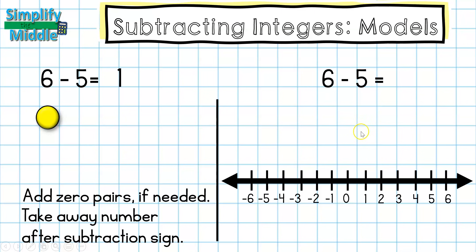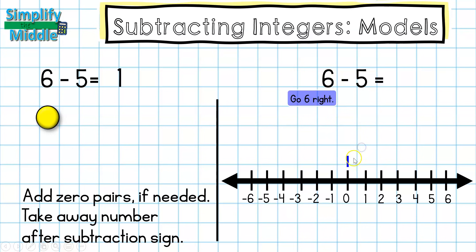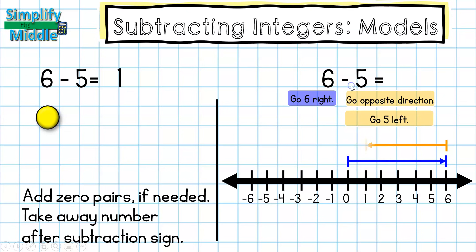Next I'm going to show this on my number line. We remember from the last lesson with adding integers that the positive or negative tells us which direction to go. So we'll start at 0, and because this is positive 6, I'm going to go 6 to the right. What makes subtraction different from addition on the number line is that the subtraction sign means go the opposite direction. So I'm going to go the opposite direction of positive 5 — since positive 5 would go right, I'll go 5 to the left. I started above 6 and ended at 1, so the answer is 1.